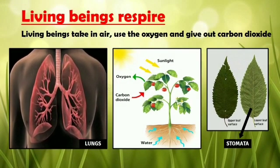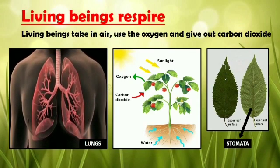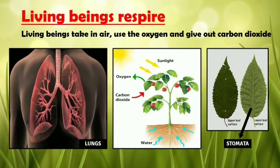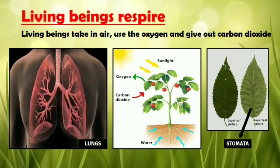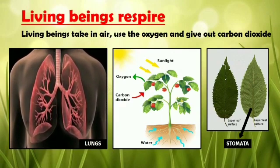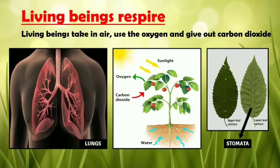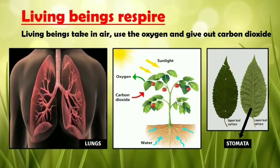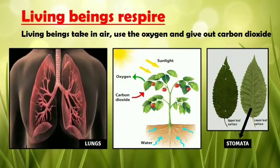Next, living beings respire. During respiration, living beings take in air, use the oxygen, and give out carbon dioxide. There are special organs to respire in animals — for example, human beings have lungs. Plants also respire; they respire through stomata. The small openings on the lower surface of the leaf are called stomata. Look at the picture — there is an upper and lower surface of the leaf.